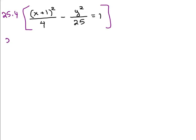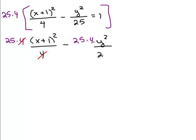So when I multiply the first term times 25 times 4, the 4's cancel. And the next term, the 25's cancel. Then I'm on the other side of the equal. I have to remember to multiply 1 times 25 times 4. Well, that's just going to be 100, right?